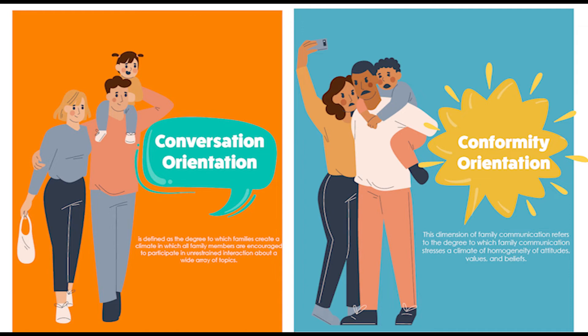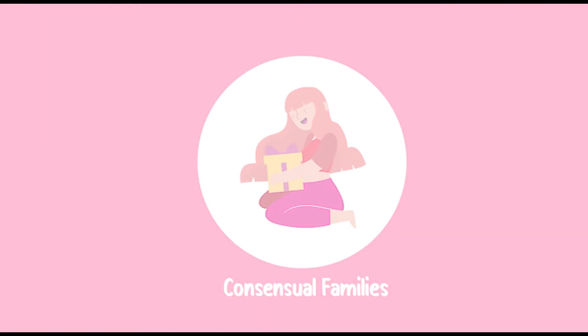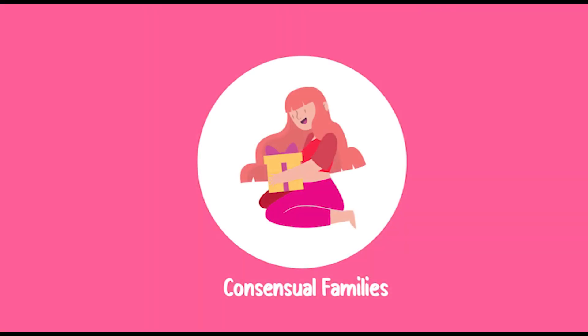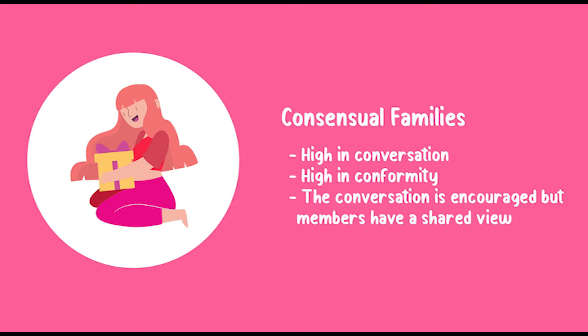So, the first family type is consensual families. Families high in both conversation and conformity orientation are labeled consensual.